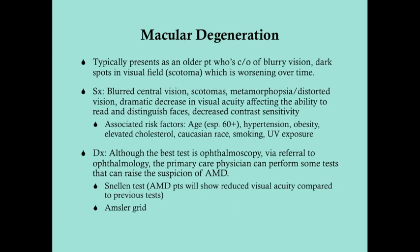Typically, macular degeneration presents as an older patient complaining of blurry vision because it's affecting the macula. This is in contrast to retinal detachment, which presents with loss of peripheral vision while the remaining vision is clear. AMD patients have blurry vision and can also see dark spots in the visual field called scotomas, and this worsens over time.